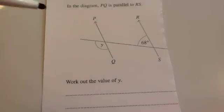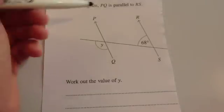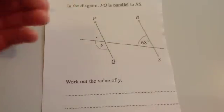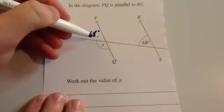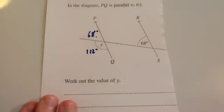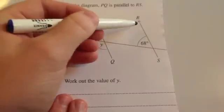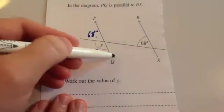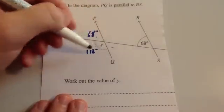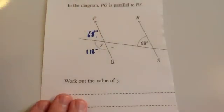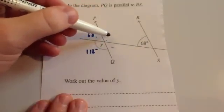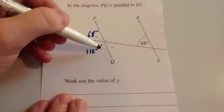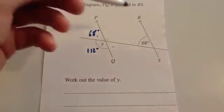Here's another exam question — calculate angle Y. This question can be done using all three different types of angles. Using corresponding angles: the 68 would equal the angle here, so that's 68 degrees, then taking 68 from 180 leaves 112 degrees. Alternatively, using alternate angles: the Z shape gives 68 here, and again that's 112 degrees. Or using co-interior angles: take 68 from 180 to get 112, which is vertically opposite to Y. So any of those methods gives Y = 112 degrees.